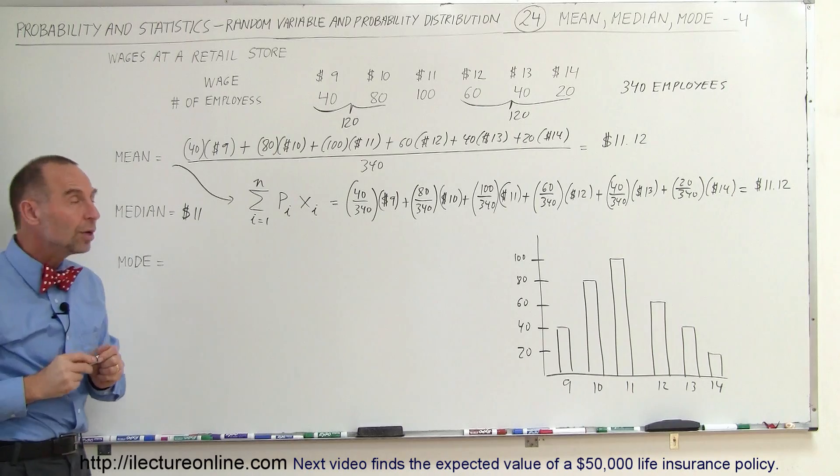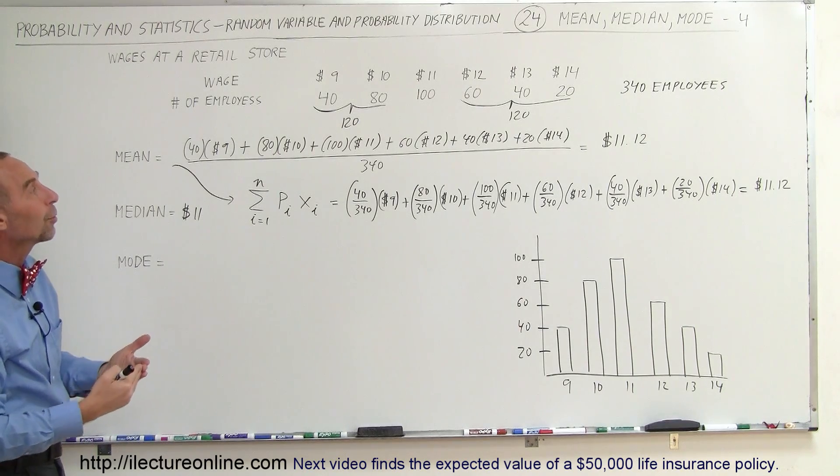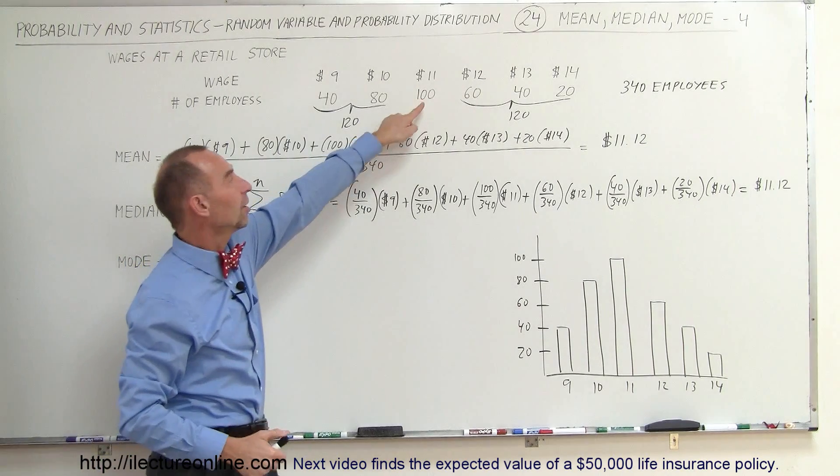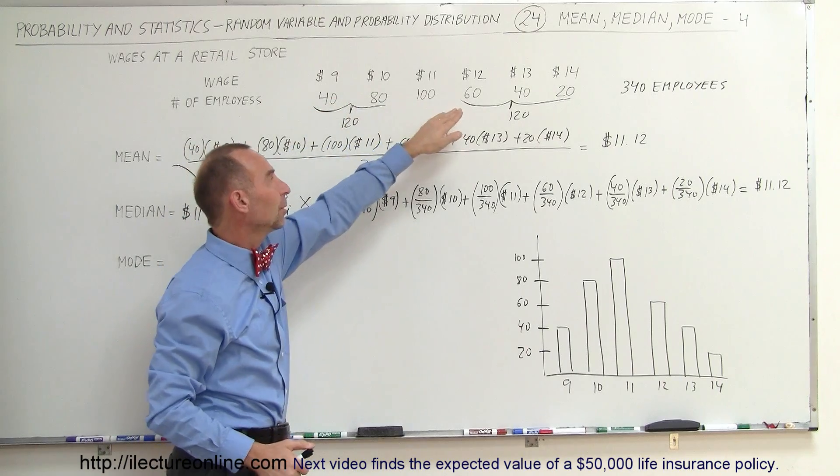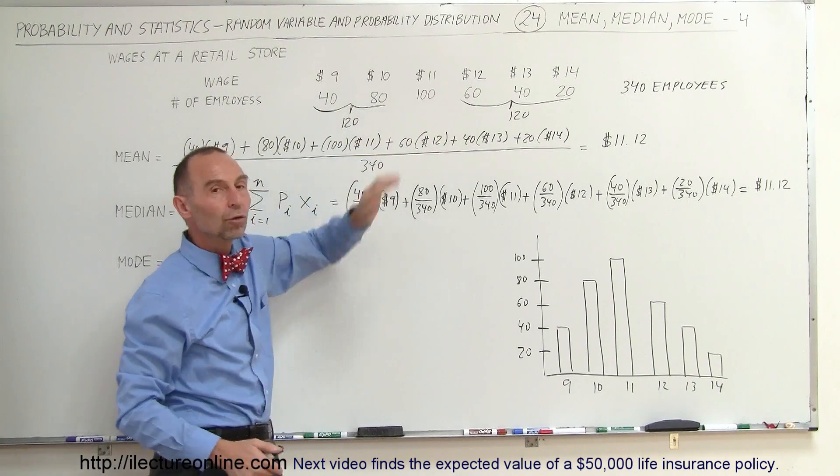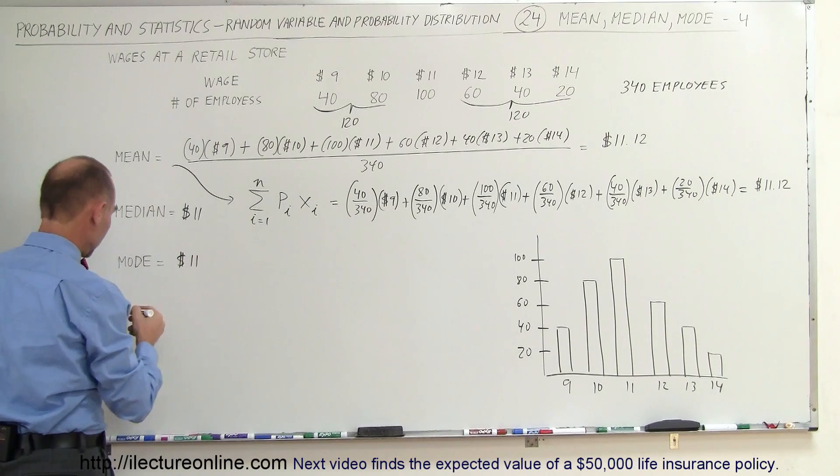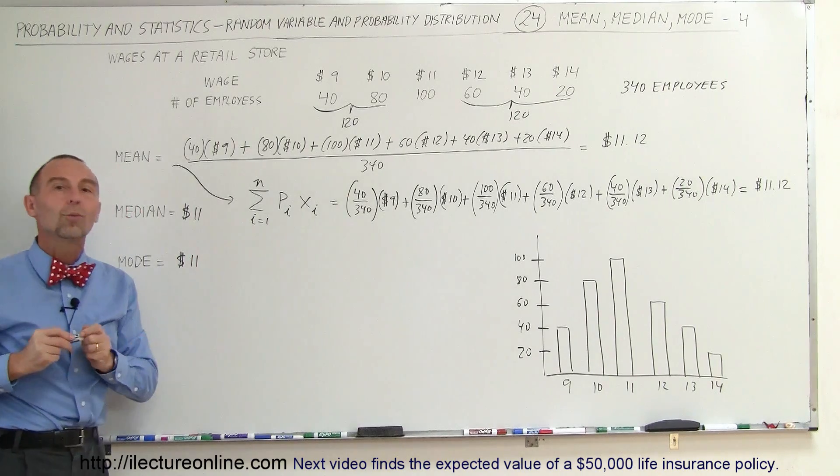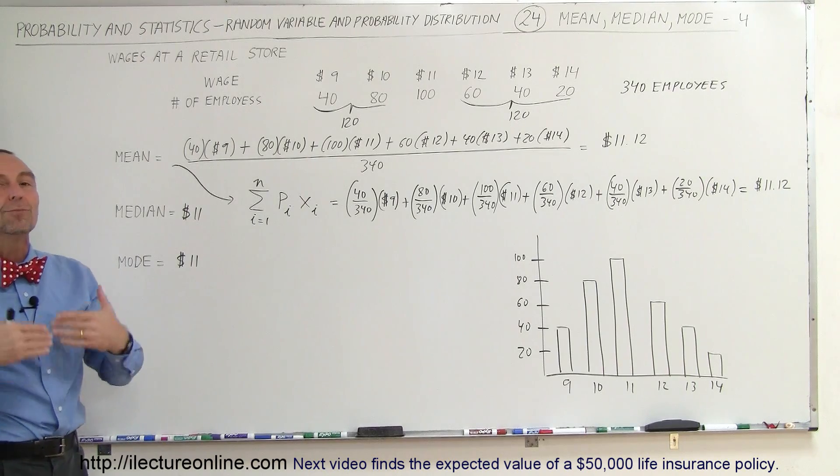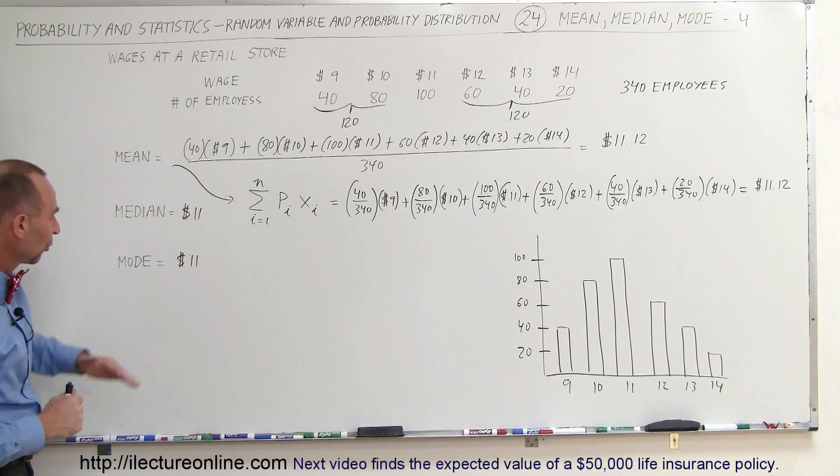And finally, the mode. The mode is the wage that the most people earn. And again, in this case, since there's 100 people and no other wage is being earned by that many people, this would then also be what we call the mode. So $11 is also the most earned wage, the wage earned by the most people at that retail store.